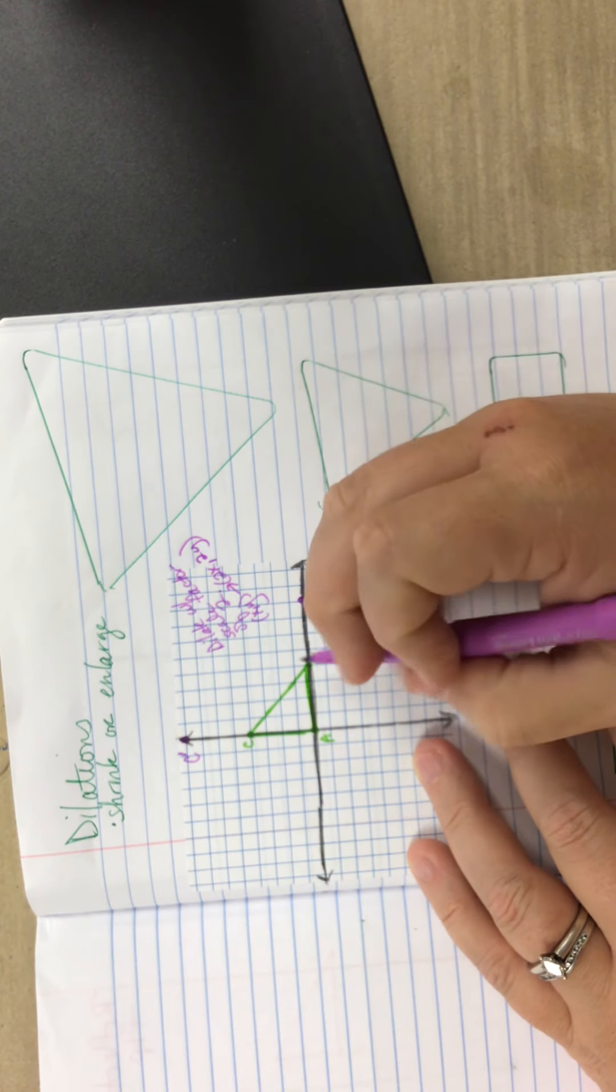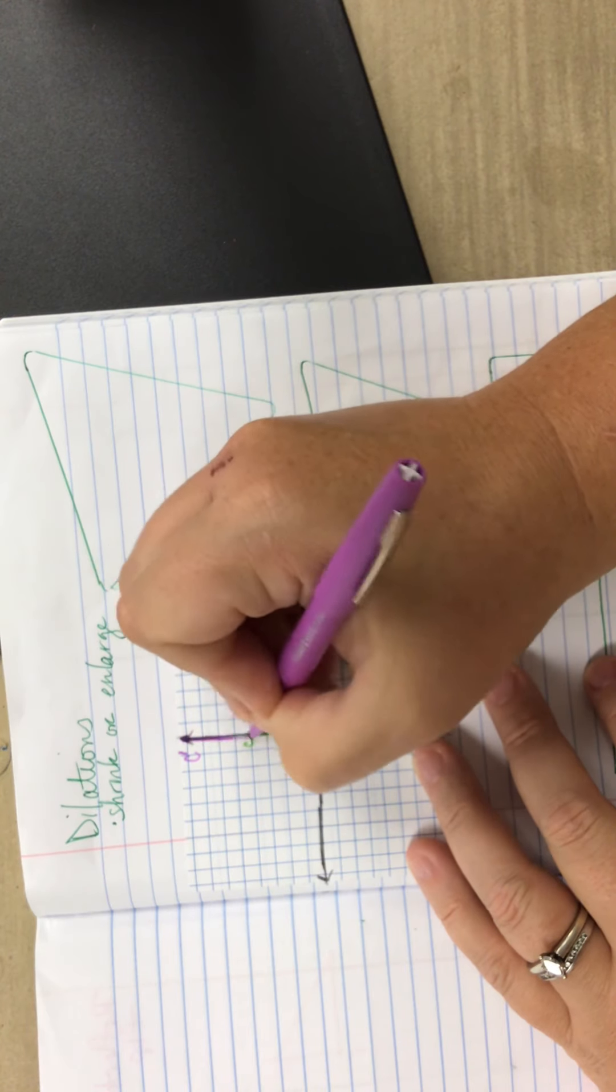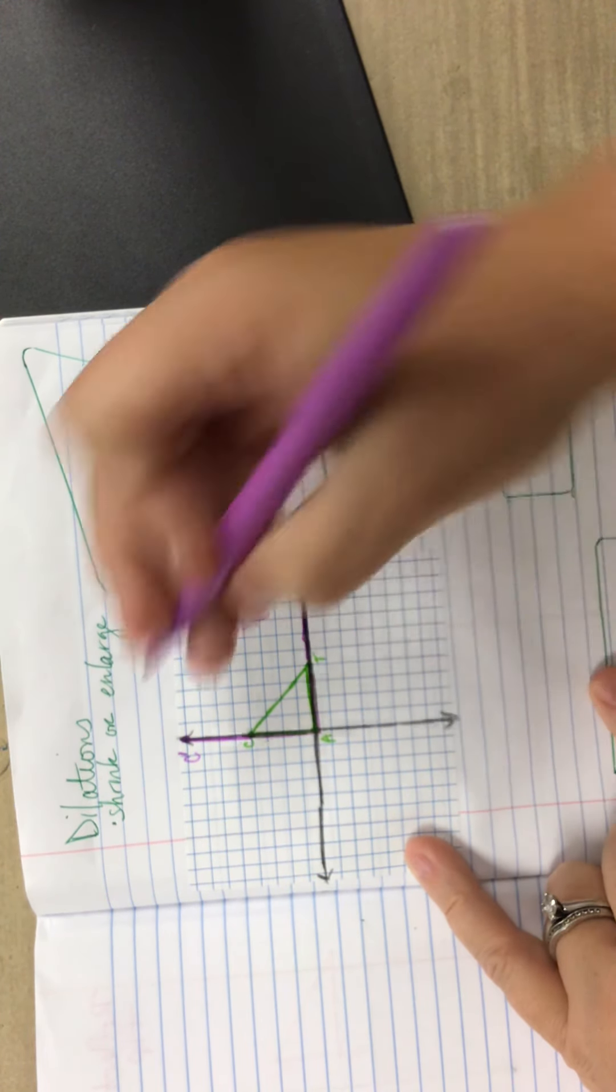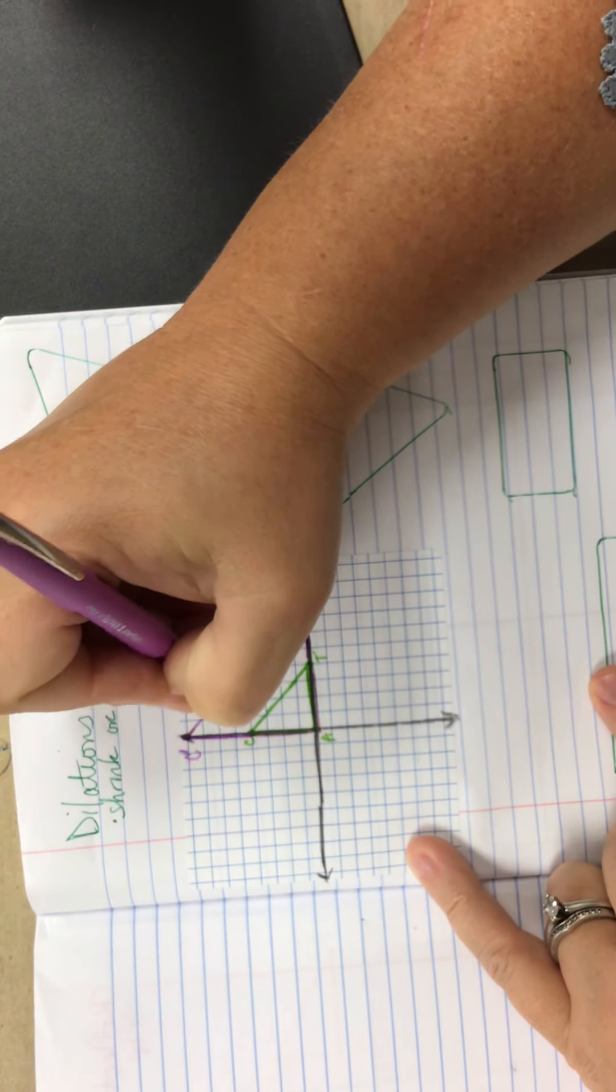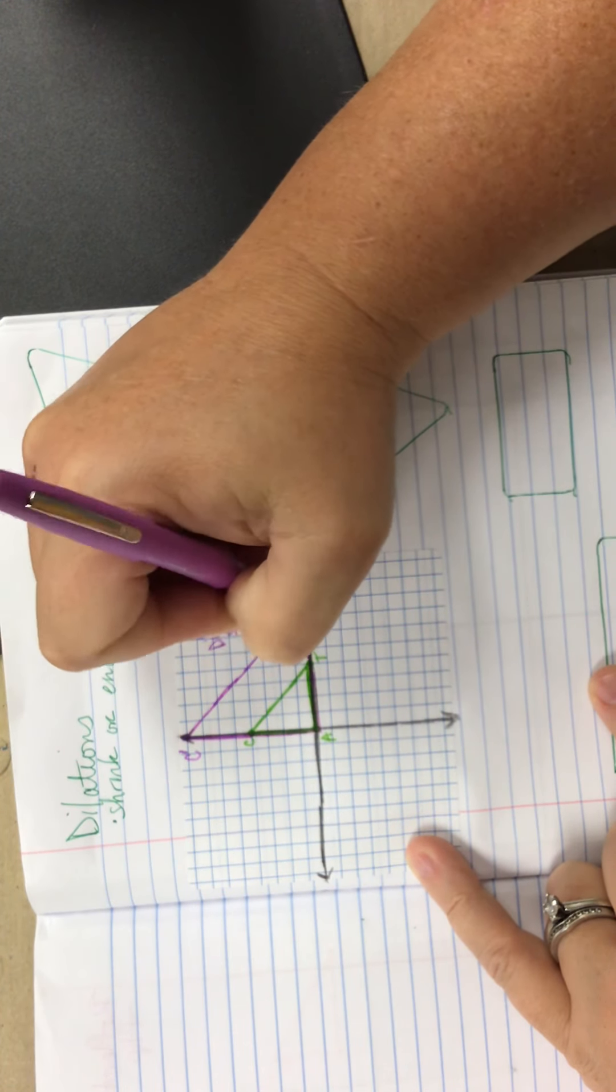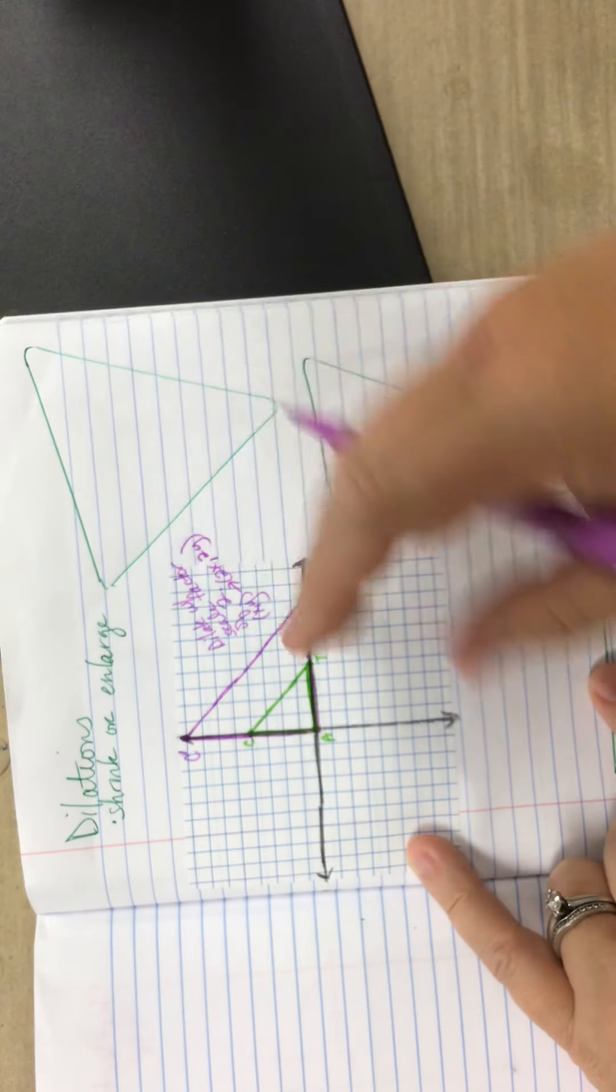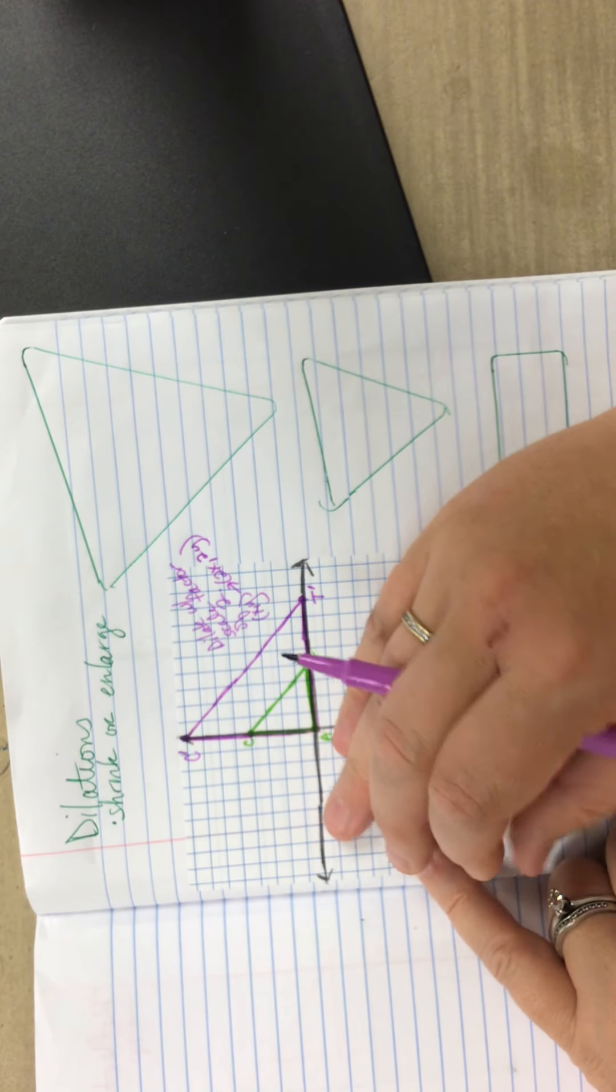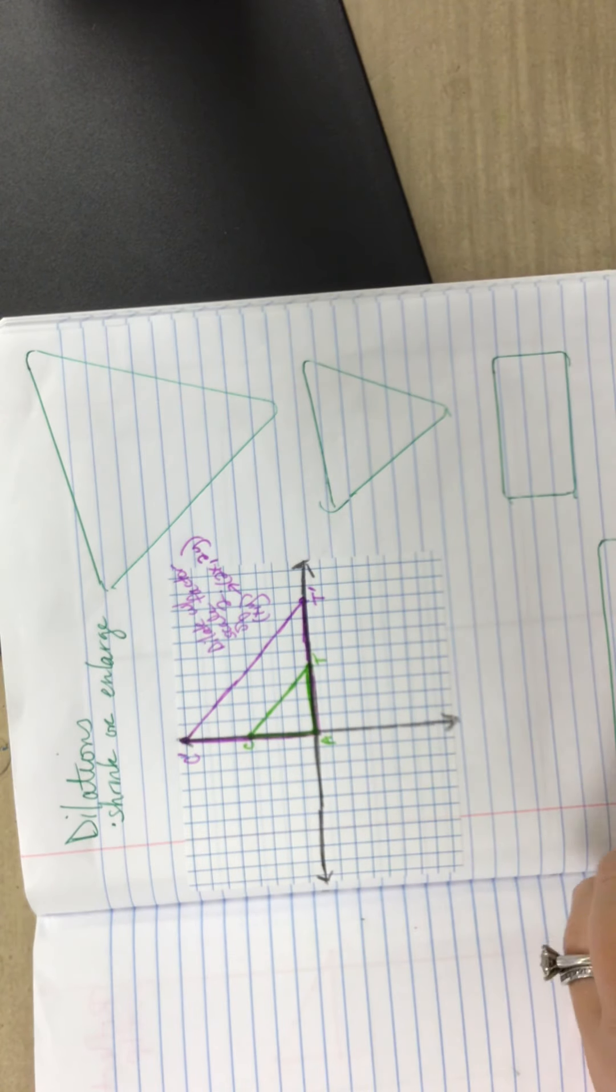So here is my T-prime. So if I draw in my new triangle here in purple, trying to be as neat as possible, if you have a ruler at home, probably want to use that. So my purple triangle, notice, is twice as large as my original green one because, again, my scale factor was 2.